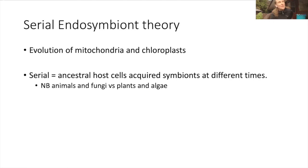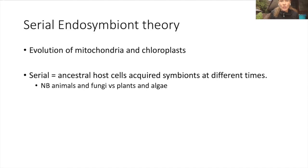So there's endosymbionts, there's kleptoplastids - these are all kind of halfway to endosymbiotic theory, but they're not all the way there. In endosymbiotic theory, you're such an extreme obligate symbiont that you lose the ability to live outside of your host. You only live in your host, and in doing so you give up all sorts of things - most of your organelles, most of your DNA. It's called serial endosymbiotic theory because it didn't happen all at once. The ancestral host cells first developed mitochondria and then over time went on to develop plastids.